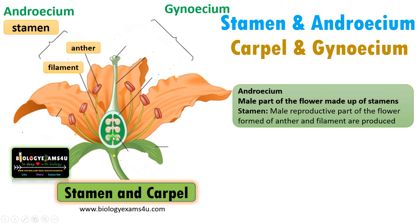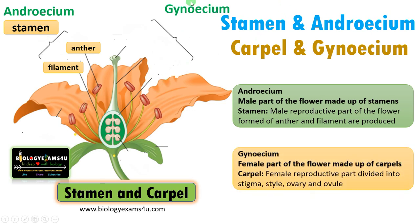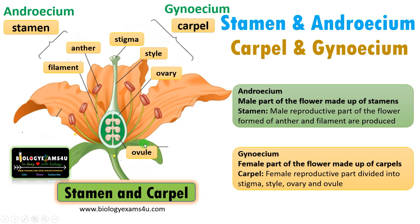Gynoecium is the innermost whorl of the flower. It is made up of carpels. A carpel is a female reproductive part made up of stigma, style, and ovary. Within the ovary there are ovules. After fertilization, these ovules form the seed. So the basic unit of gynoecium is called the carpel. A flower may be made up of a single carpel or many carpels.